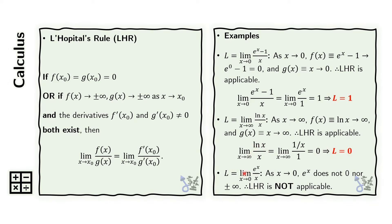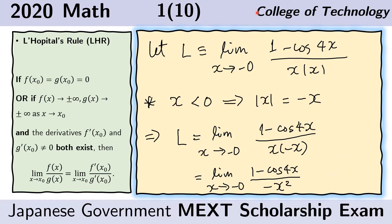Finally, in this limit here, as x approaches 0, the numerator does not approach 0. So L'Hôpital's rule is not applicable in this case. First, let us rewrite the given and let's call it L for convenience.